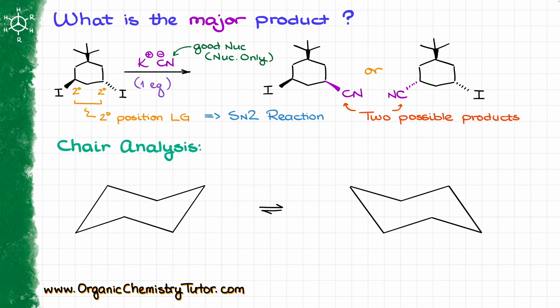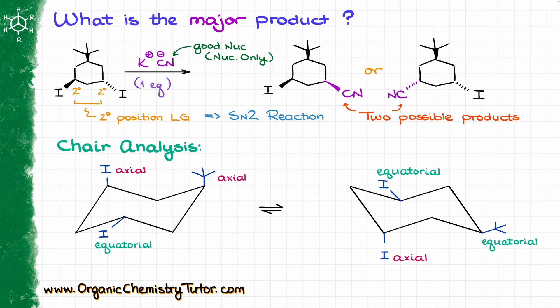I'm going to start by drawing a stem for both of my chairs — both flipped forms of that chair — and I'm going to add my groups to each one. I do have a dedicated tutorial on how to draw chair conformations, so if you need a refresher, go ahead and check that out first, because we are going to be dealing with a lot of chairs in this video. Going back to my chair conformations, the one on the left has two axial groups, and the one on the right has two equatorial groups. The conformation on the right is more stable because the extremely bulky tert-butyl group is in the equatorial position.